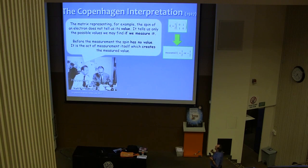Here's the explanation about what they think the theory means. Heisenberg's saying the matrix representing, for example, the spin of an electron, and the reason I chose that is just because it's actually a much simpler matrix, does not tell us its value, does not tell us the value of this physical quantity spin. It tells us only the possible values we may find if we measure it. So they introduced this crucial aspect of measurement for the first time into quantum physics. In this particular case, the matrix implies that the possible values you could get if you measured this quantity are plus a half or minus a half.